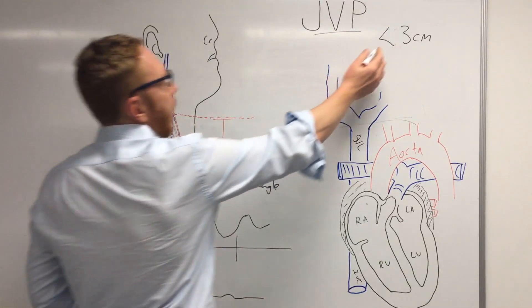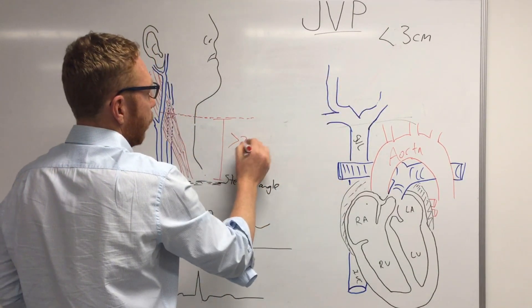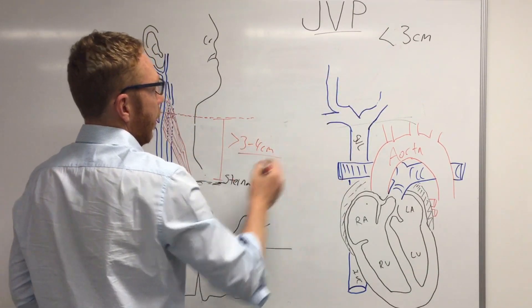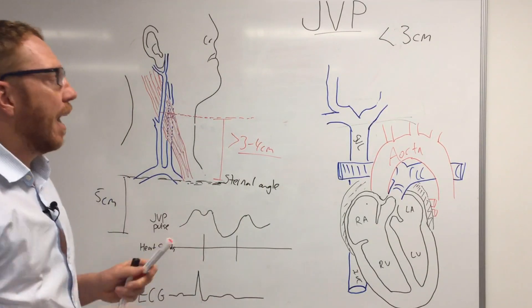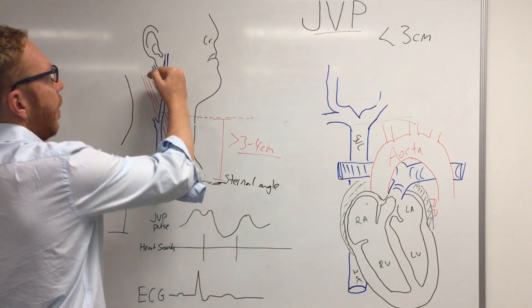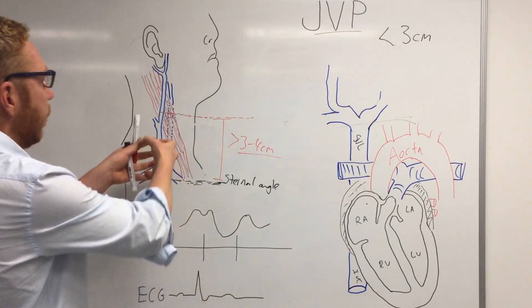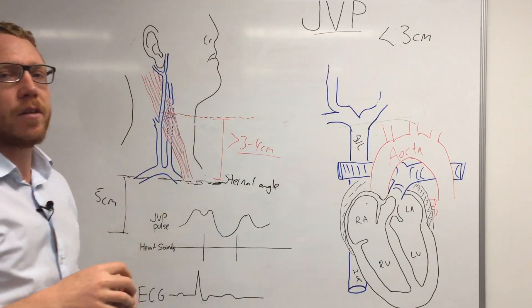Now if it is greater than three to four centimeters, then it will be considered to be an elevated JVP. So essentially the higher it is the worse it is because that's telling you there's a greater pressure in the system.